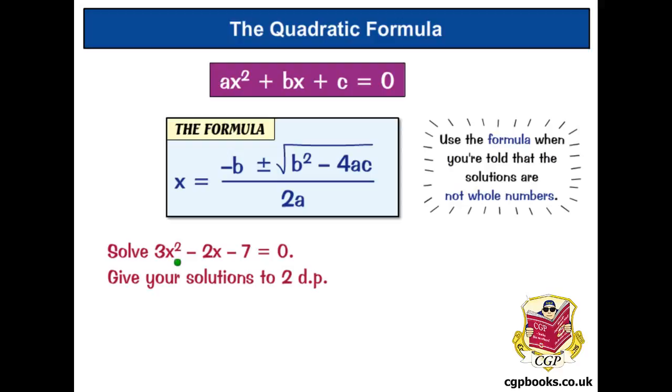So, let's make sure it's in the standard format. X squared term, X term, number term, equal to 0. Now, A equals 3. B equals minus 2. And C equals minus 7. So, we've got two minus signs here, so we're on high alert.